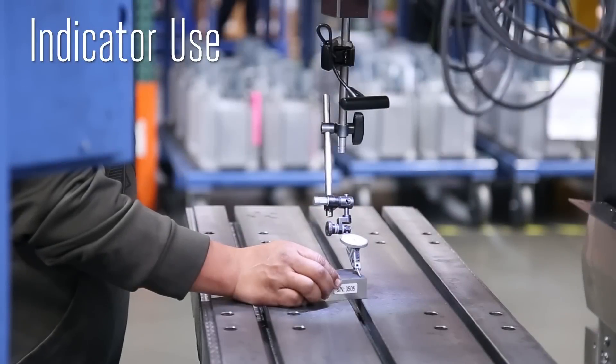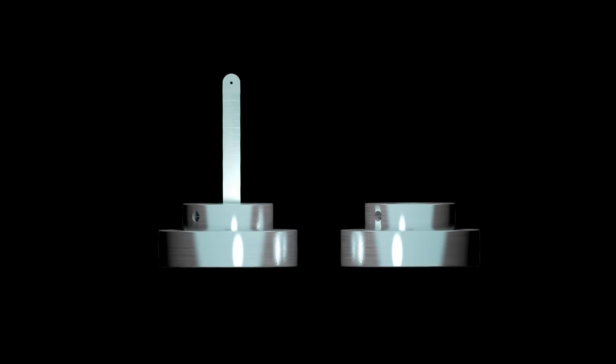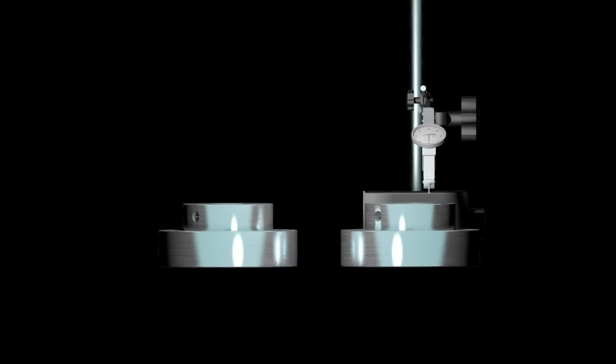Now an indicator doesn't actually provide absolute measurements like length or width. You use a caliper, a micrometer, or even a scale for that. An indicator measures the difference between a desired position and the actual feature. How tall is this part? You need a scale for that. How tall is this part compared to this one? That's when you use an indicator.